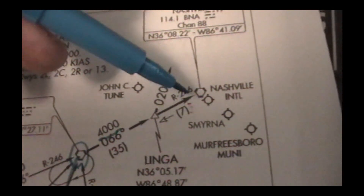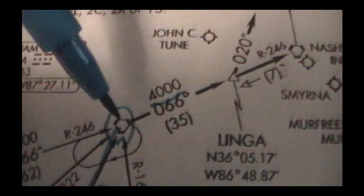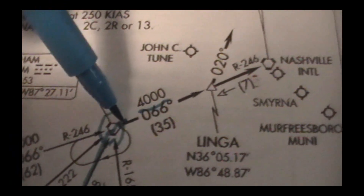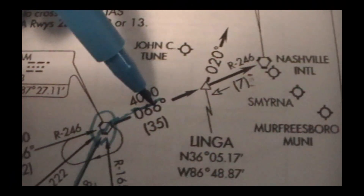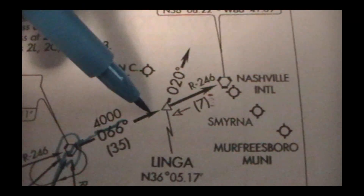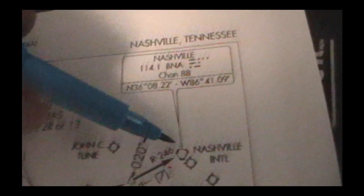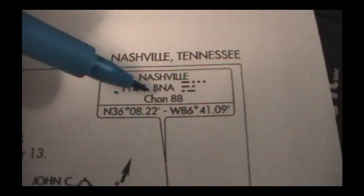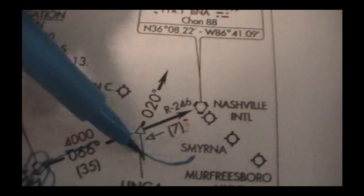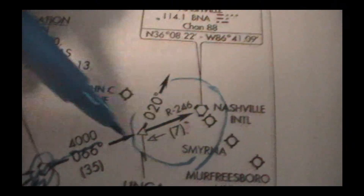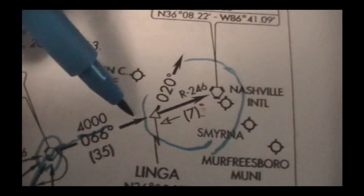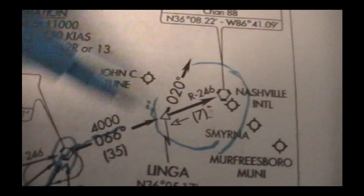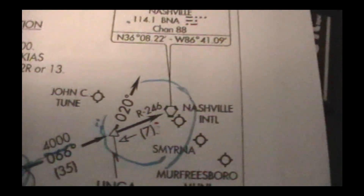We're pretty close to Nashville. Now we want to head outbound from Gram at 066 degrees, flying away — just fly outbound, heading towards Nashville. The Nashville VOR is 114.10. This brings us into the Nashville area, and that's all we want to know.